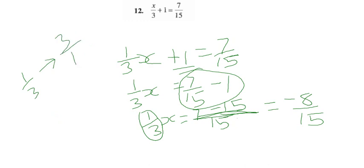So when we move it to the other side, it becomes x equals -8/15. And there's a minus sign, so don't make a mistake. And we're multiplying by 3/1.